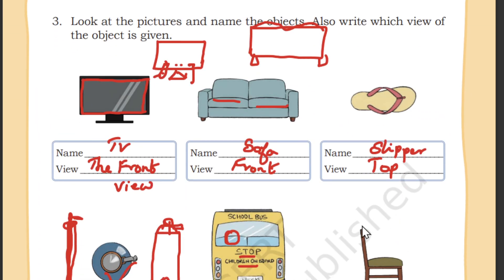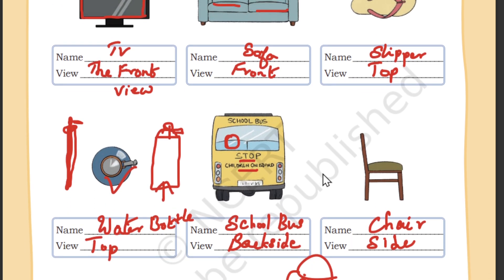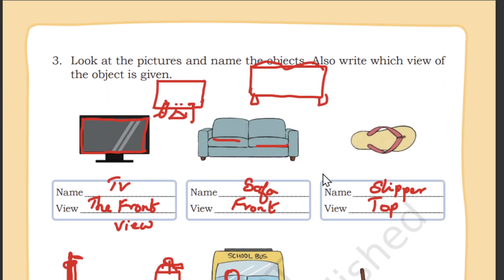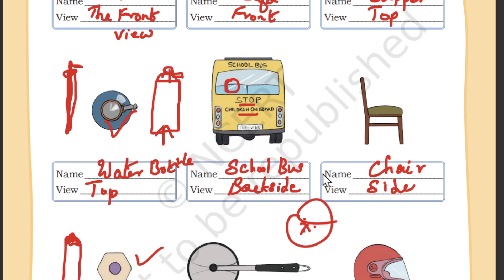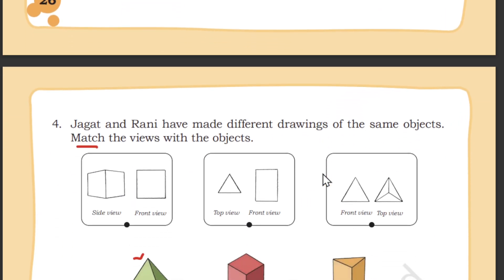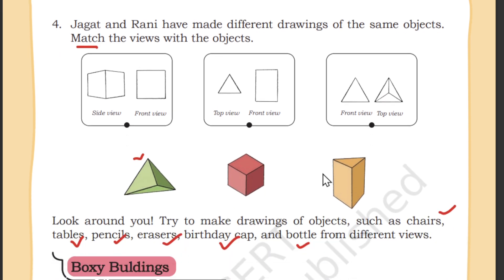We were given objects and had to write the name and identify the view. For example, a TV shown from the front is a front view, a sofa shown from the front is a front view, and a slipper shown from above is a top view. Students who missed the chapter explanation video should watch it first to understand the concept before attempting the worksheet, otherwise it will be very difficult to complete.